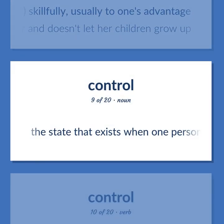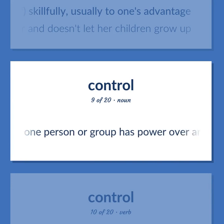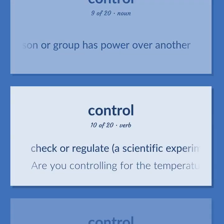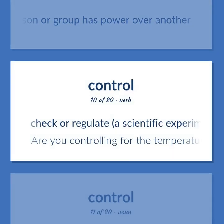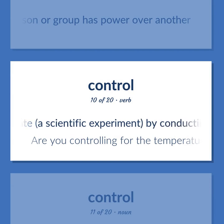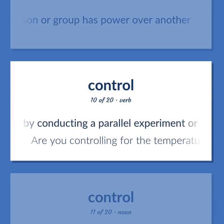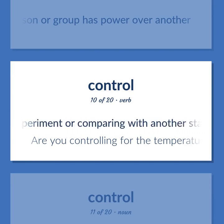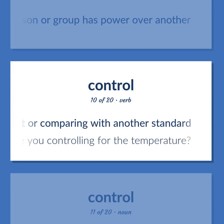CONTROL: The state that exists when one person or group has power over another. Check or regulate a scientific experiment by conducting a parallel experiment or comparing with another standard — are you controlling for the temperature?